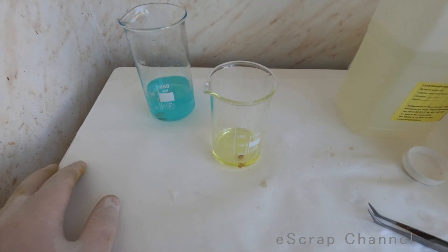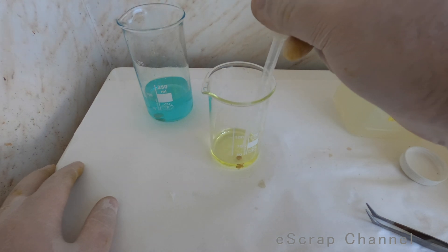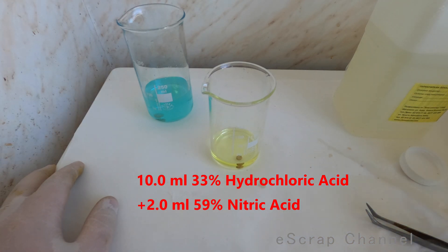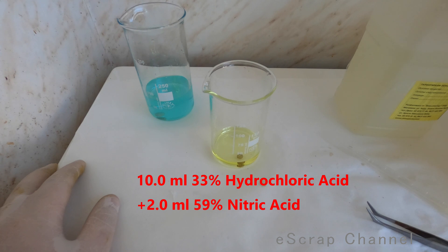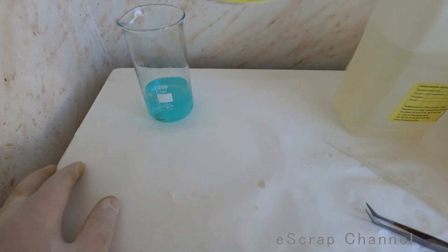I will add 2 milliliters nitric acid now and let's start dissolving this gold. Bubbles already started so let's wait for it. It will dissolve probably in 30 minutes.